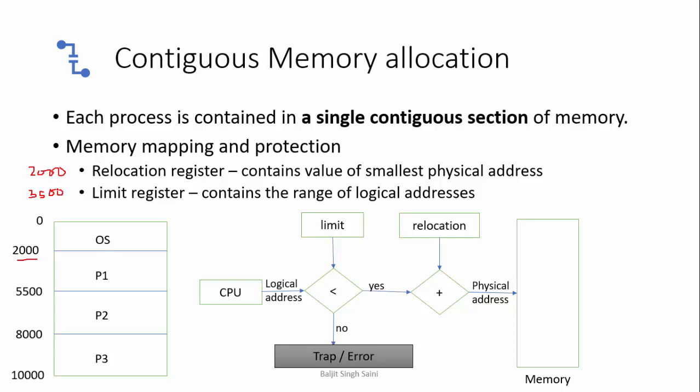If I need the data at address 500, the logical address is 500. First check: is this 500 less than the limit? Because total addresses are 3500. Yes, 500 is less than the limit. So the actual physical address is the relocation register value plus 500, which is 2000 plus 500 equals 2500. The data required at logical address 500 is actually at memory address 2500.